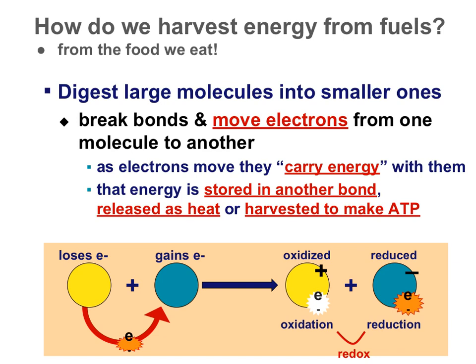We want to slow down and talk about this transfer of electrons so that we can follow, in general, what happens in the metabolic processes when organisms harvest energy or ATP. If we have these two macromolecules here — the yellow and the blue — if we break bonds in big molecules, we can move the electrons from one to the other. If a macromolecule loses its electrons, if it donates them to something else, it's going to become more positive. So the yellow molecule here loses electrons; if it loses that negative charge, it becomes more positive.